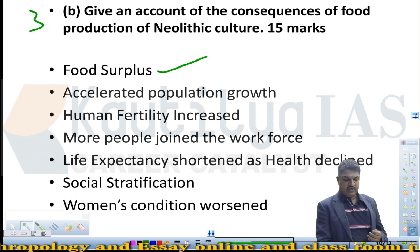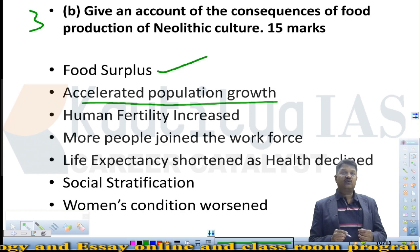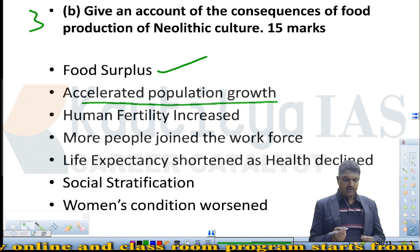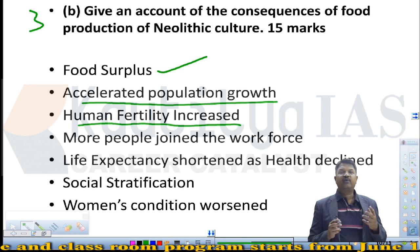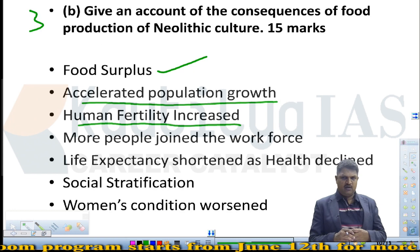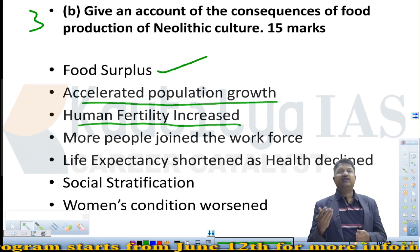Earlier, food security was not assured because of the nature of hunting and gathering — depending on nature for food subsistence. Now humans developed food surplus by controlling nature itself. Once population increased, more population joined the workforce, providing more hands to agriculture and cultivation around the world. This very ironically actually shortened life expectancy — it is a bit anomalous, because you might expect that with food surplus and population growth there would be more life expectancy and better health.